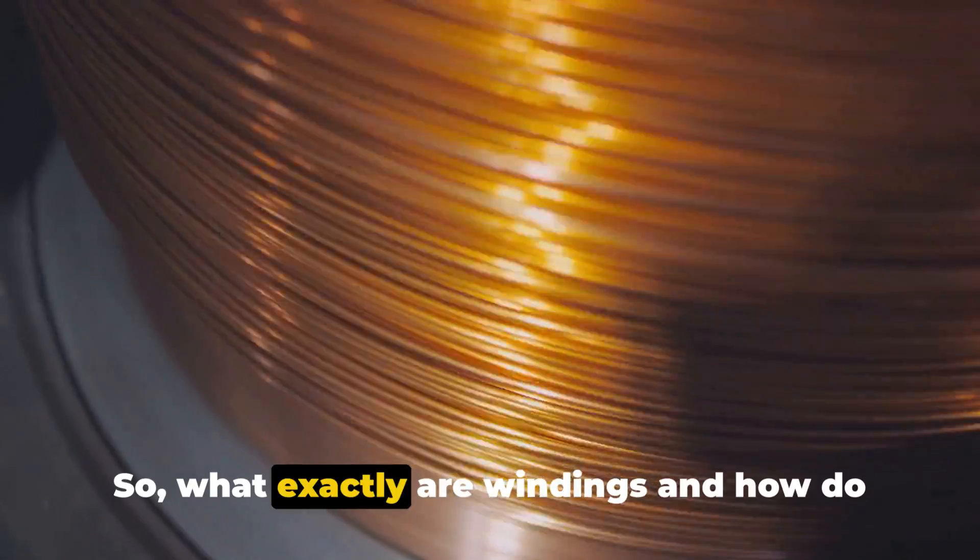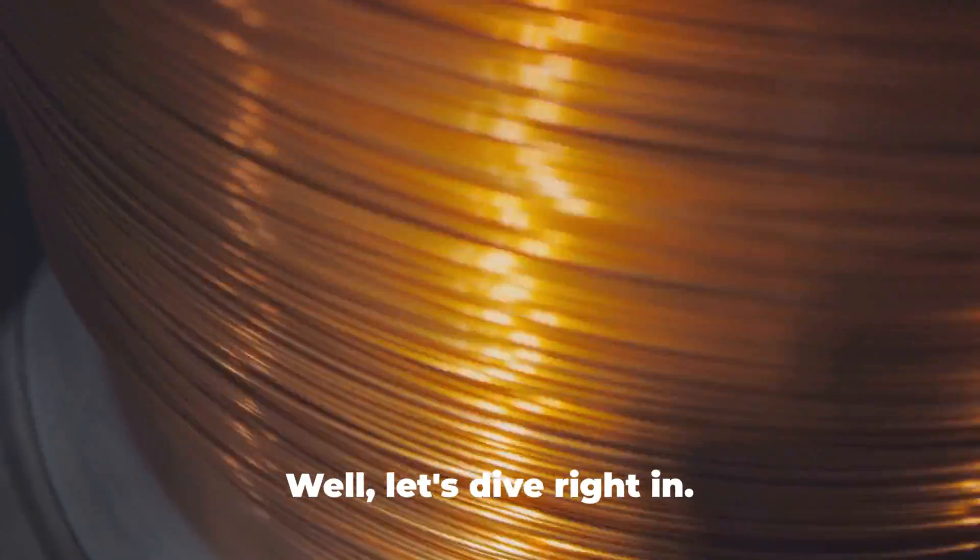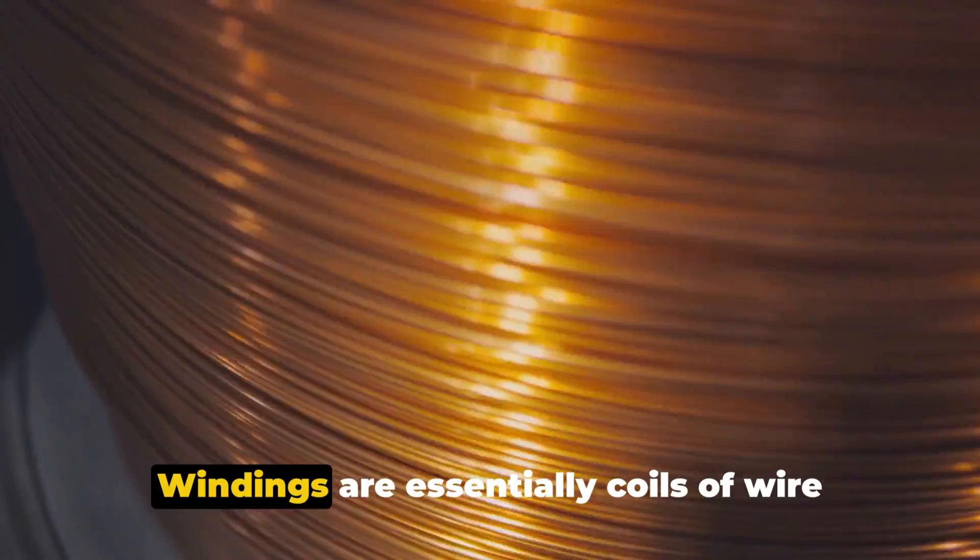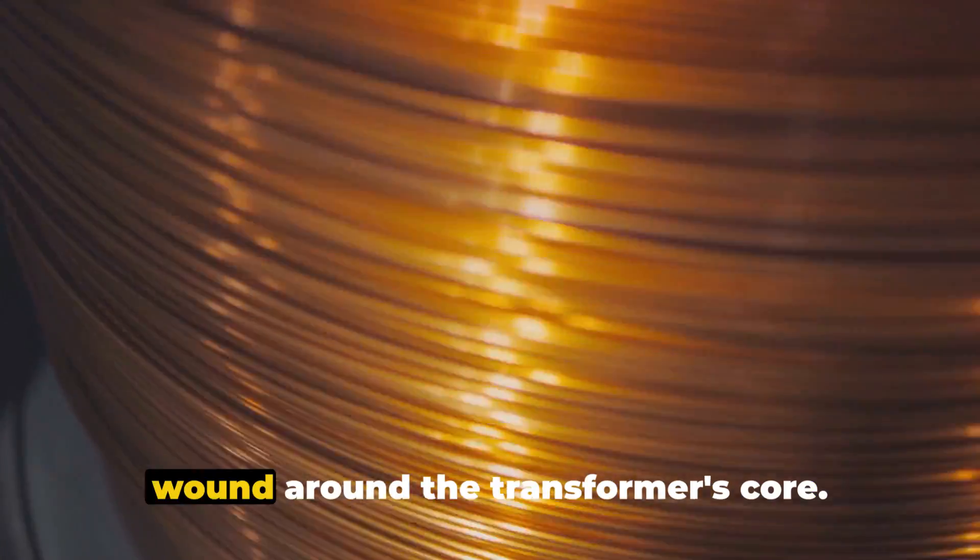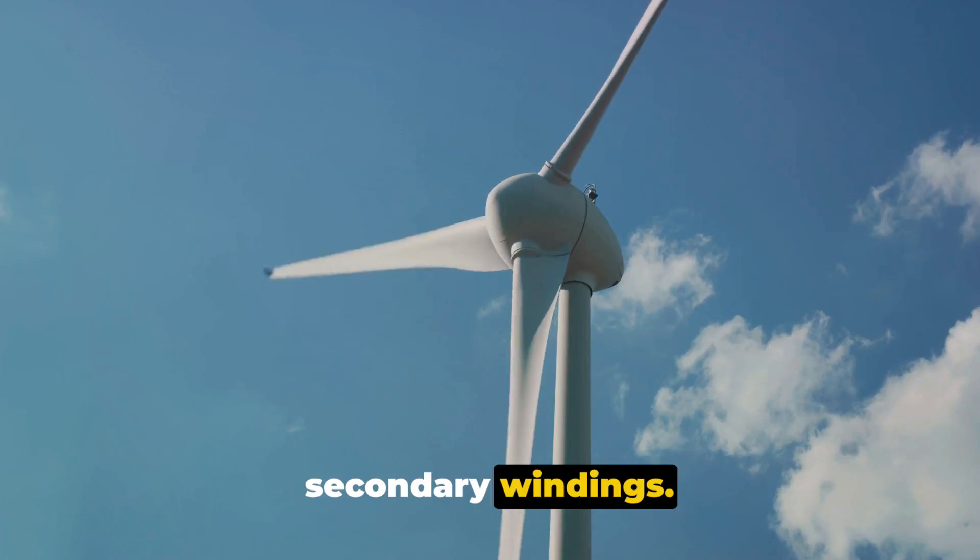So, what exactly are windings and how do they function in a transformer? Well, let's dive right in. Windings are essentially coils of wire wound around the transformer's core. We have two types, the primary and the secondary windings.